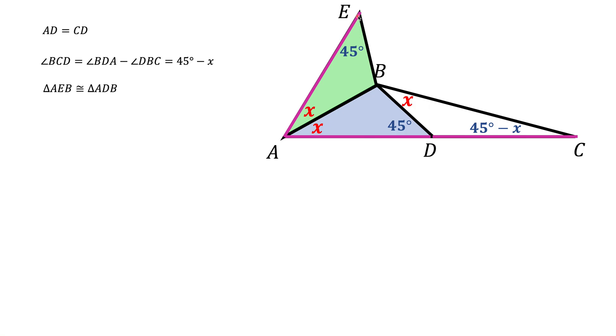And now if we connect point E and point D, this new triangle EAD will be an isosceles triangle. We know this angle A which is 2X, so we can easily find angle E and angle D which should be congruent to each other. Both of them should be 90 minus X.